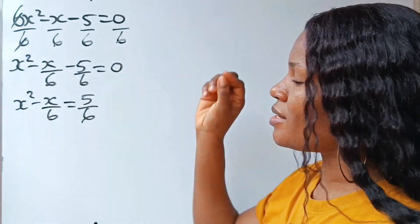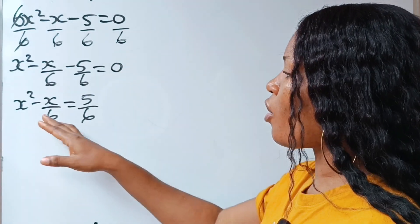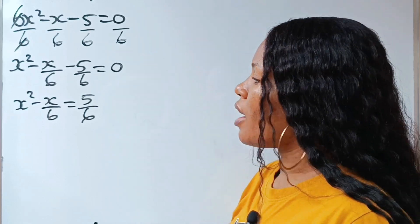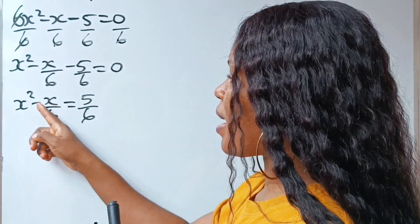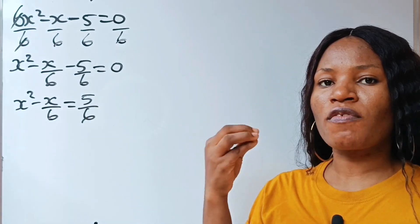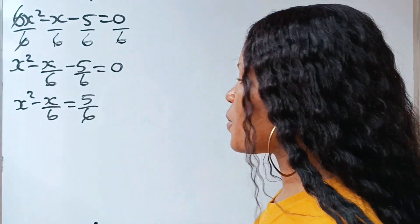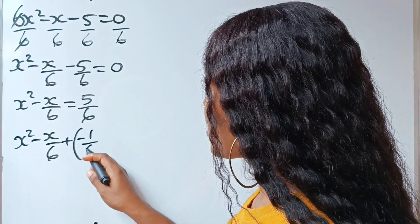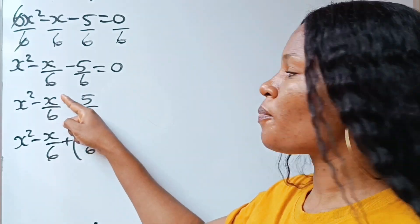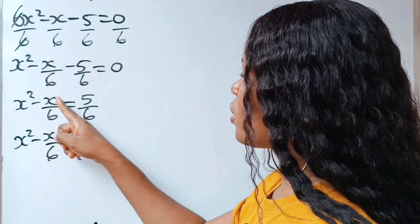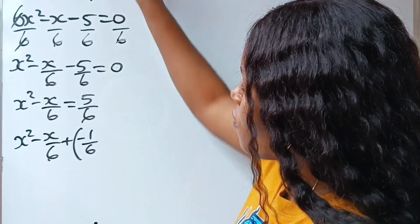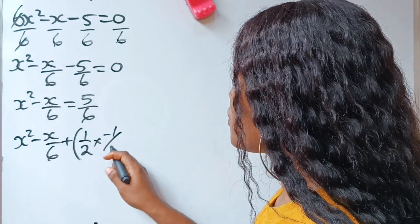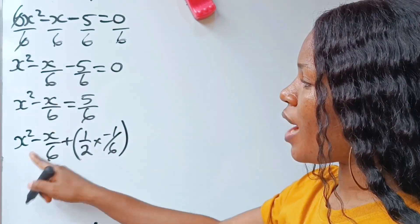Now once you have something like this, the next step is to bring out the coefficient of your x, then get half of it — half the coefficient of x. In this case, the coefficient of x is minus 1 over 6. So we are going to add half the coefficient of x to both sides of this equation.